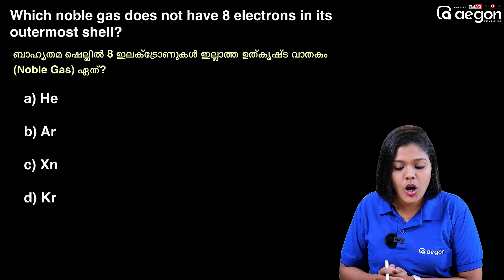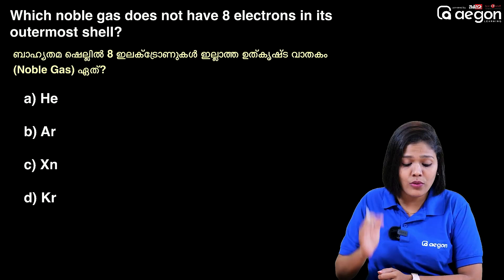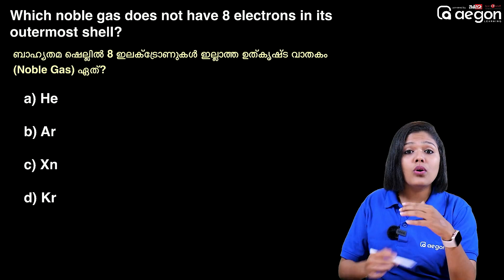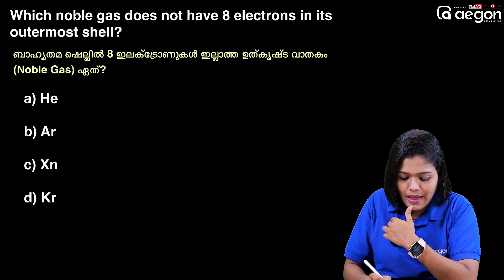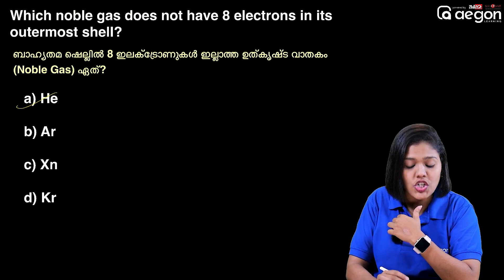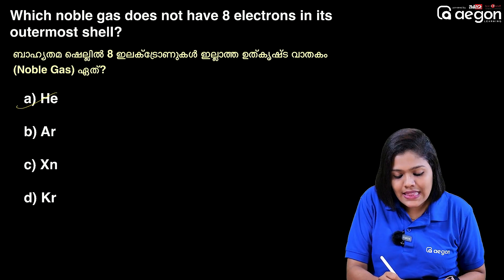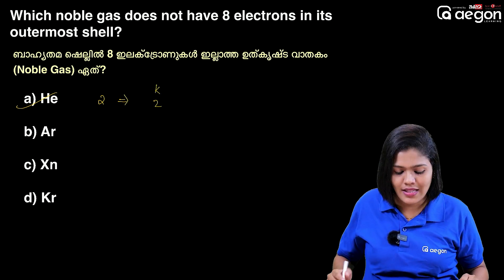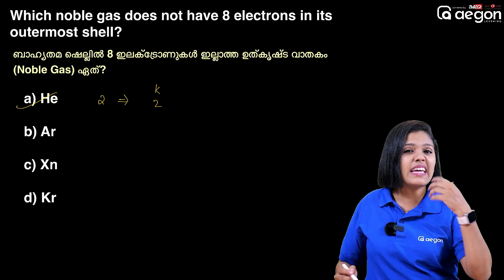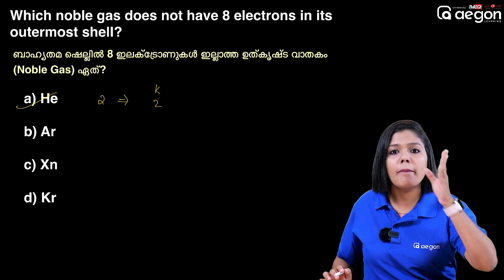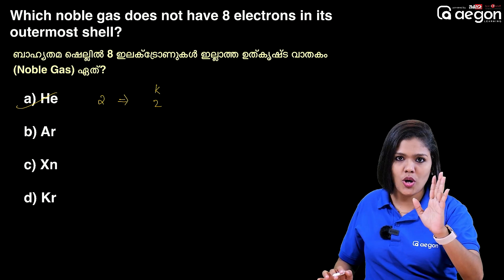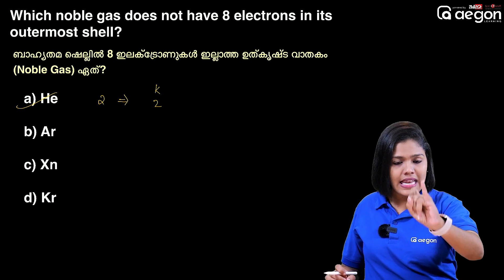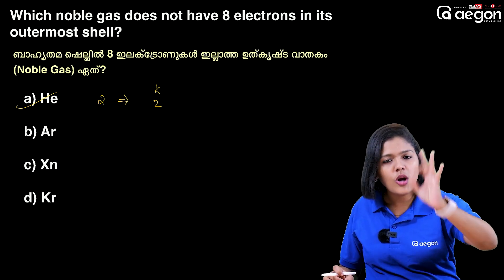Which noble gas does not have 8 electrons in the outermost shell? In the outermost shell, there is no 8 — that means we are going to talk about helium. Helium has atomic number 2, so there are only 2 electrons in the outermost shell. The other noble gases — argon, xenon, krypton, neon — these are noble gases, also called inert gases.